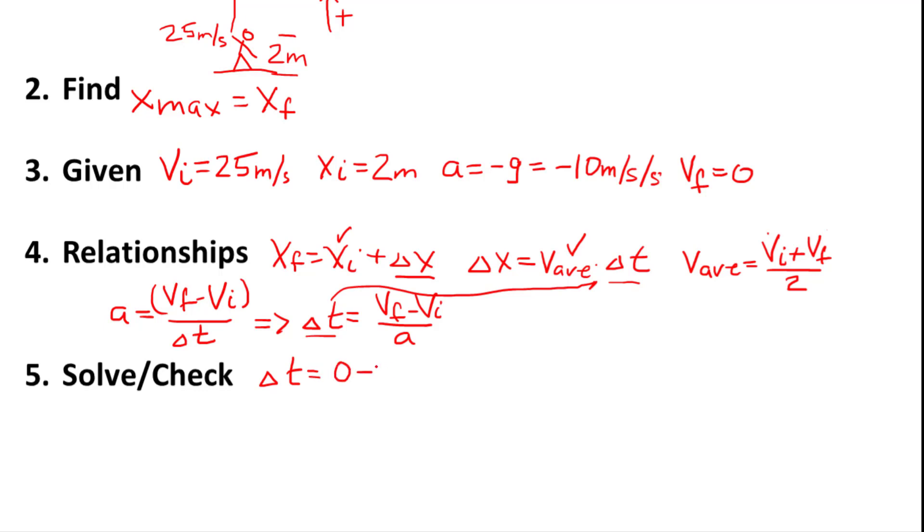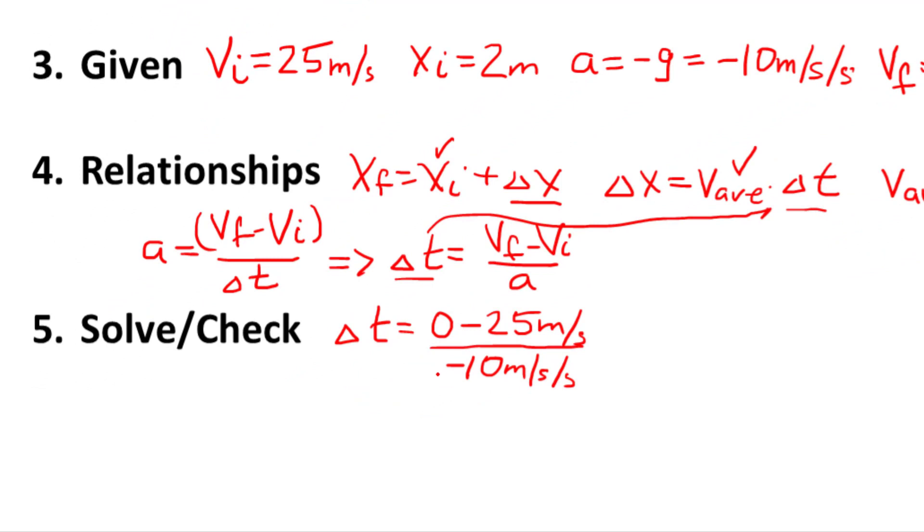This is the last one we figured out. Delta t is going to be equal to final velocity, 0, minus our initial velocity, 25 meters per second, divided by our acceleration, minus 10 meters per second per second. Why is it minus 10? Because I'm calling the up direction positive. I do some quick math here, and I know my time is 2.5 seconds.